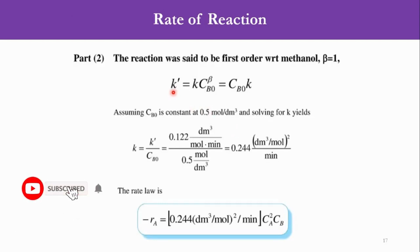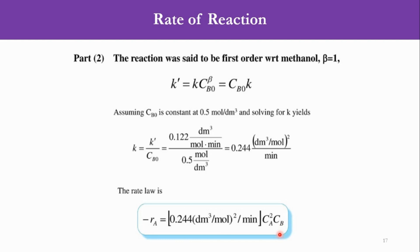Finally, since k' = k · Cb0^β and β = 1, we have k' = k · Cb0. Knowing k' = 0.122 and Cb0 = 0.5, k = 0.122 / 0.5 = 0.244. The final rate law is: −rA = 0.244 · Ca² · Cb, where the system is second order with respect to species A and first order with respect to species B. Using this example we found the reaction order and the specific reaction rate constants — both pseudo and true.